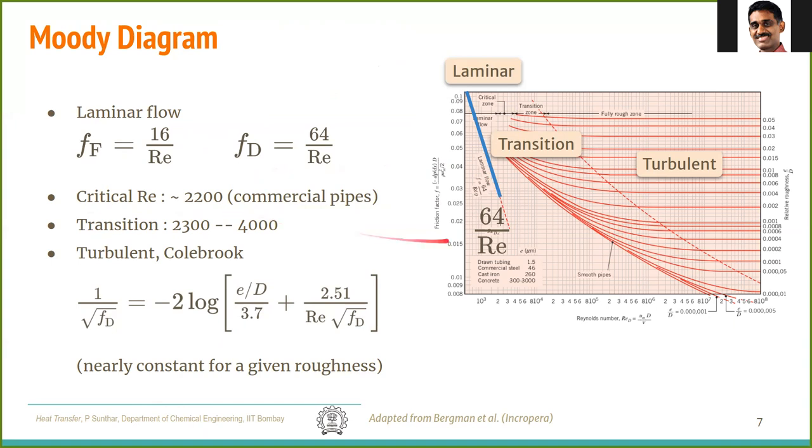So till about 2200, the flow is laminar. This is for commercial pipes. If you have smoother and smoother pipes with very less disturbance from atmosphere, this number can go up to even 1 lakh. But for practical purposes, it is around 2200. In some places, it is reported as 2100, 2300. That is just dependent on the type of pipe you are using. But around this value, you will see that the flow is no longer laminar.